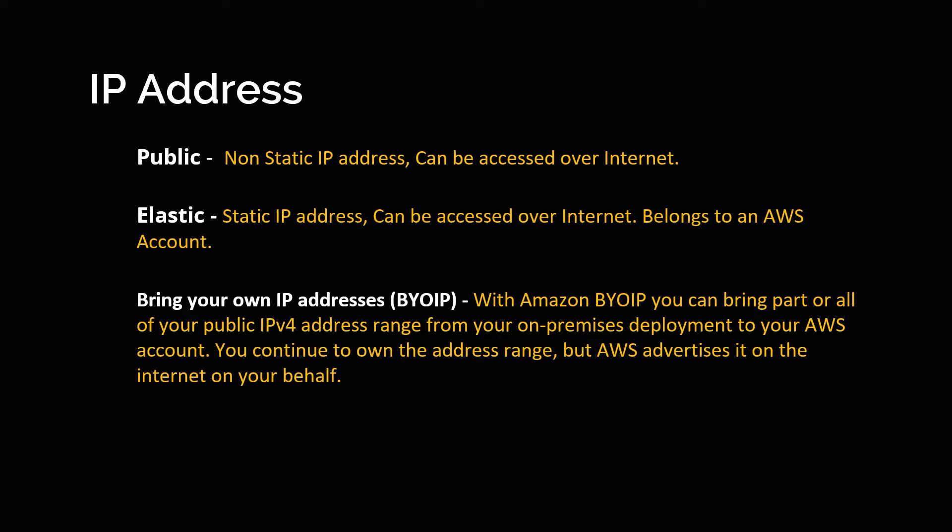There are certain limitations with elastic IP addresses. For example, you can have only up to five elastic IP addresses per region, and elastic IP addresses are not free. If you create an elastic IP address and don't use it, you will be charged. Or if you assign an elastic IP address to your EC2 instance and the instance is in a stopped state, that elastic IP address is idle and you will still be charged. As long as your elastic IP address is assigned to a running EC2 instance, you won't be charged.